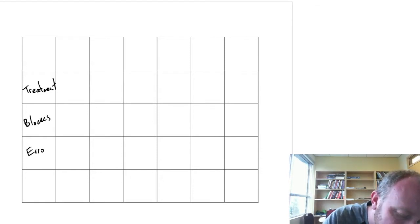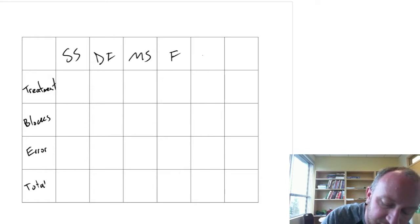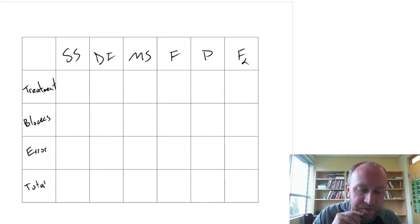We have SS due to treatments. We'll have blocks. We'll have error. And we'll have SS total. And here's sum of squares. Here's degrees of freedom. Here's mean square. F. P. And F critical. Okay.